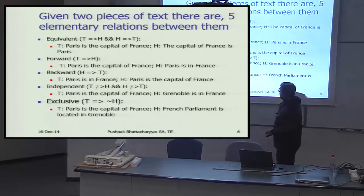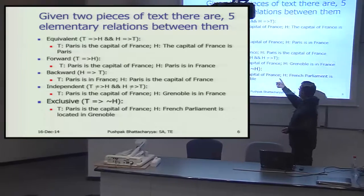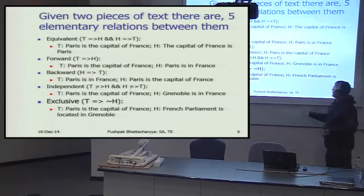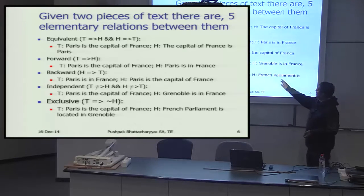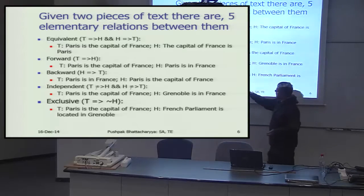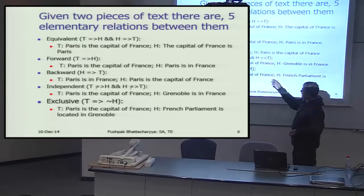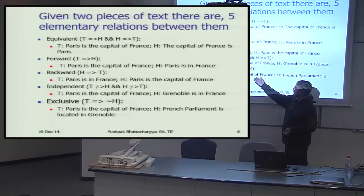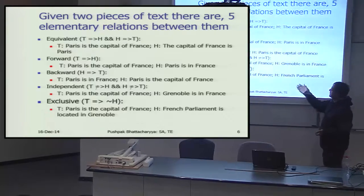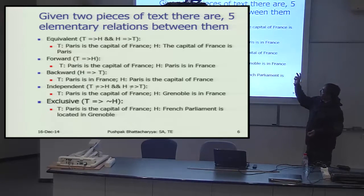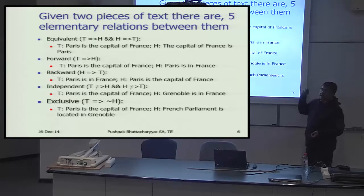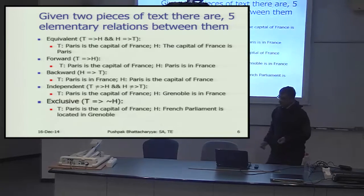There is also exclusivity: 'Paris is the capital of France' means nothing else can really be the capital of France. If the hypothesis is 'French parliament is located in Grenoble,' then T implies not-H, since the capital must contain the parliament. These five elementary relationships hold between two pieces of text.